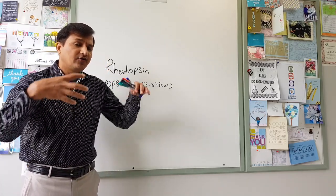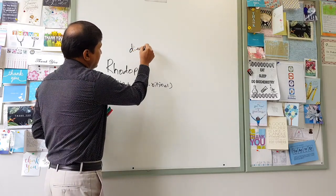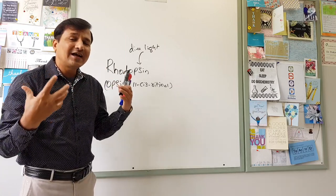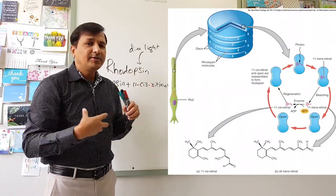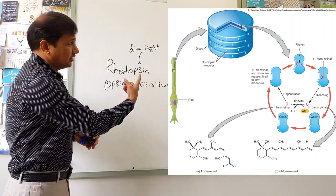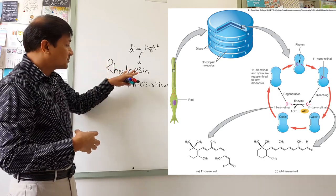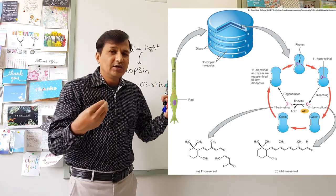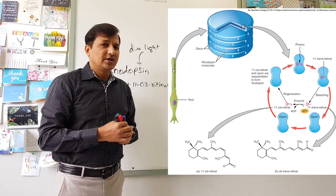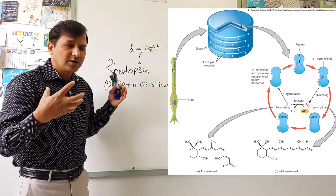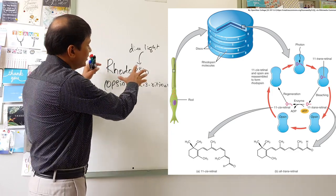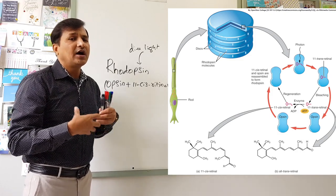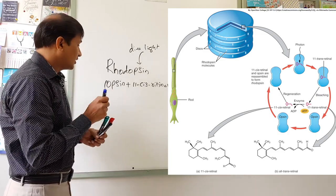Whenever dim light or low light falls onto rhodopsin, there will be photodegradation of rhodopsin — a breakdown into opsin and all-trans retinaldehyde. The 11-cis retinaldehyde is converted into all-trans retinaldehyde. As shown in the figure, when light falls onto rhodopsin, opsin and all-trans retinaldehyde separate. This is the photodegradation process, and it induces a neuronal signaling process. When this conformational change occurs in rhodopsin, it induces a conformational change in an associated protein called transducin.